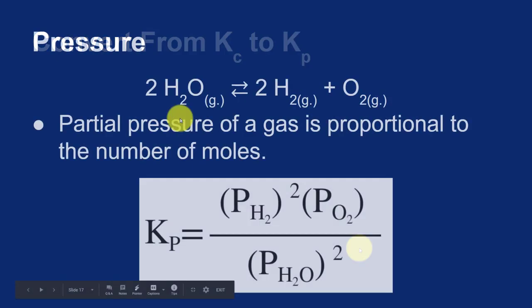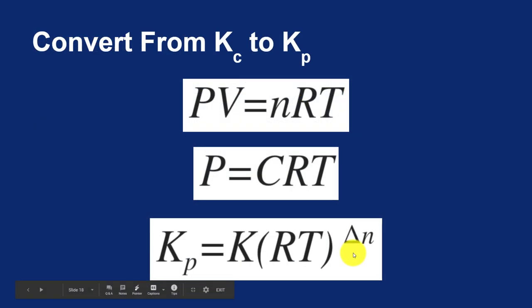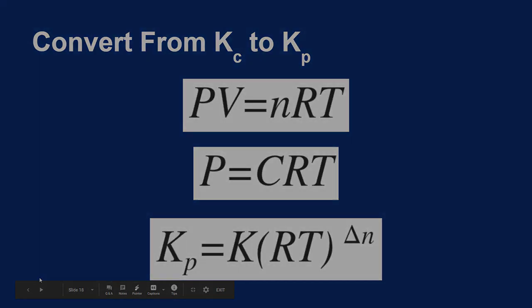So if I go back in this reaction, I'm starting with two moles of gas and I'm ending with three moles of gas. So my delta N would be one. So this would be my equilibrium constant based on concentration times the ideal gas constant expressed in moles and liters, our temperature in Kelvin, and delta N would be one. Here we go.